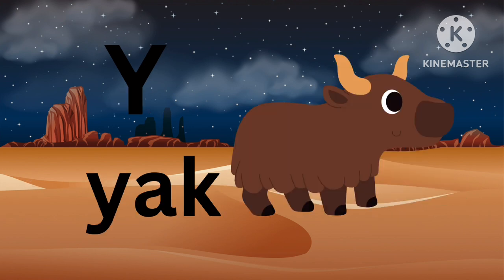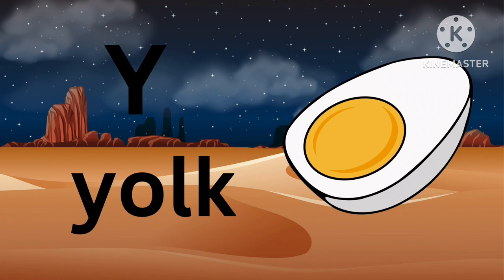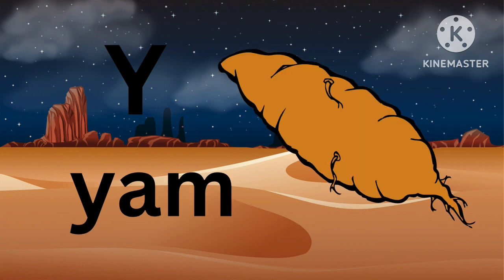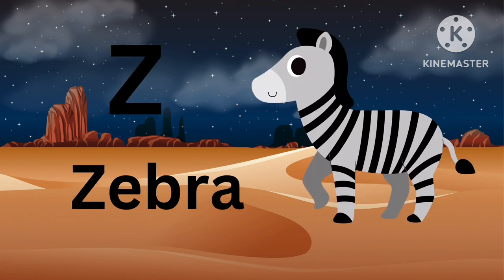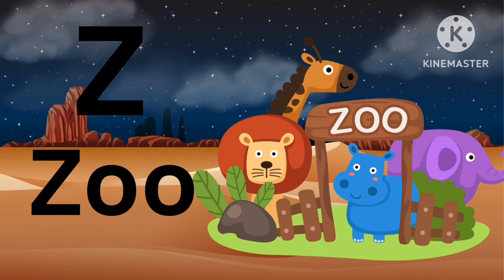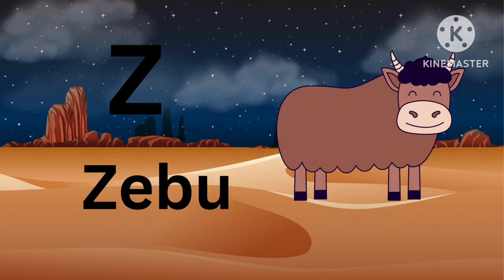Y for Yak, Y for Yarn, Y for Yoyo, Y for Yam, Y for Yogurt. Z for Zebra, Z for Zipper, Z for Zoo, Z for Zero, Z for Zebu. Subscribe for more videos!